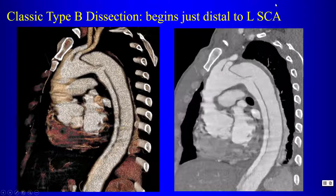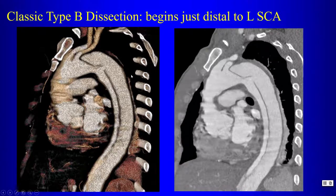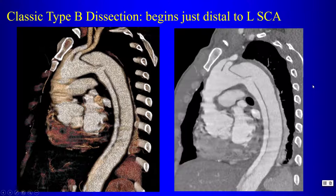The Stanford classification is most widely used. In a classic Type B dissection, it involves the descending aorta beginning just distal to the left subclavian artery. We can often identify the entry tear with modern CT scanners. The dissection propagates forward but also retrograde from the entry tear, and the proximal extent is typically stopped at the origin of the left subclavian artery.